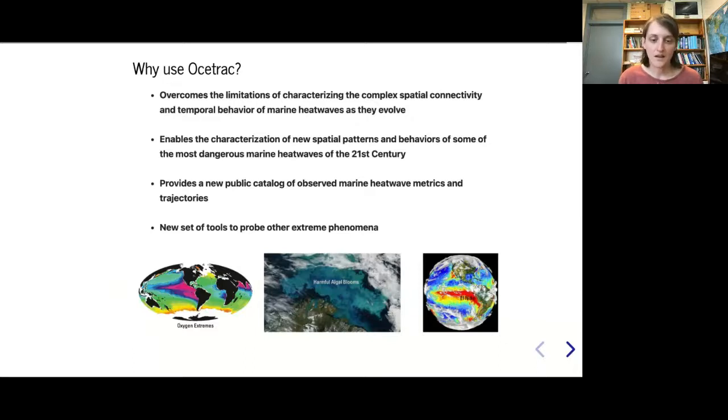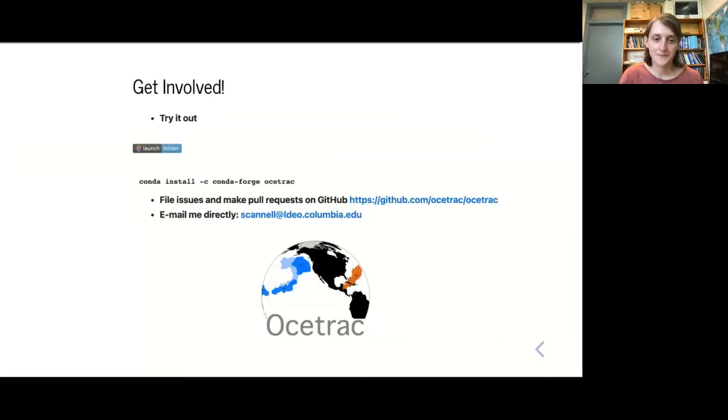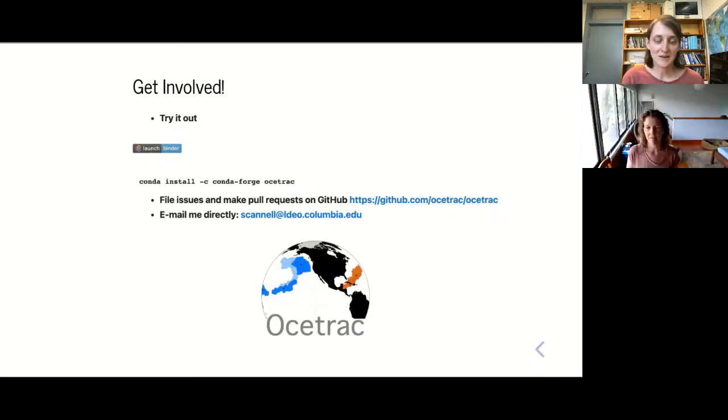If you're into oceanography, you could look at ocean extremes in nutrients, pH, harmful algal blooms. You can even track El Niño heat anomalies with OAStrack. We'd love for people to use OAStrack and try it out. We provided a binder link here connected to Pangeo, everything's there and ready to run. Feel free to get in touch.